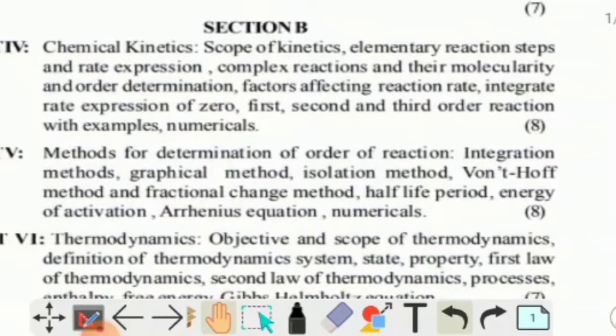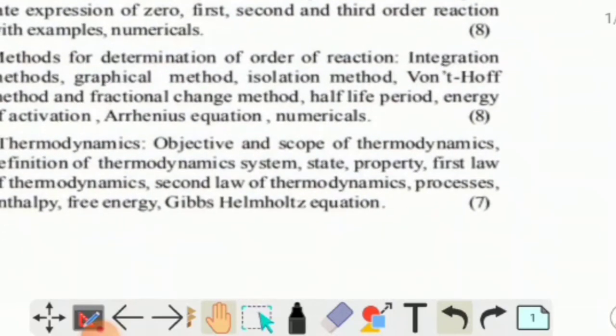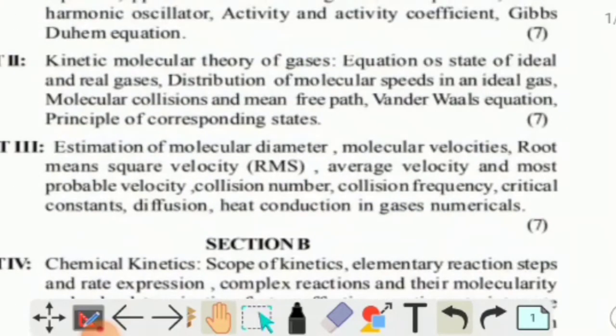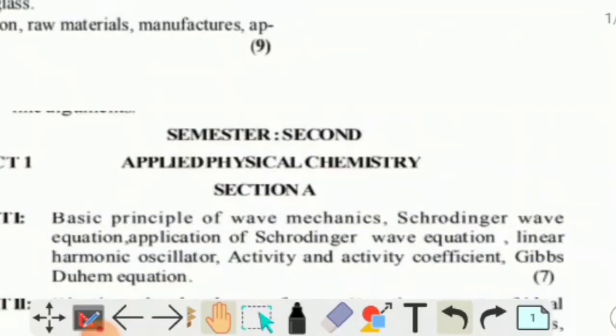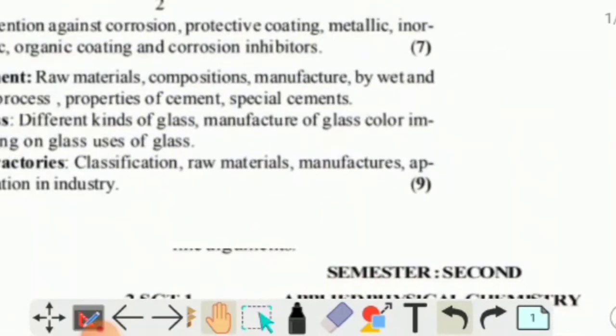Unit 5 includes integration methods, graphical method, isolation method, half-life method and fractional change method, half-life period, energy of activation, Arrhenius equation, and numericals. Unit 6 is Thermodynamics: objectives and scope, definitions of thermodynamic system, state property, first and second law of thermodynamics, processes, enthalpy, free energy, and Gibbs-Helmholtz equation. This is the syllabus for the second semester.